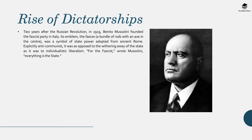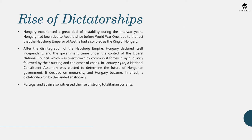Two years after the Russian revolution, in 1919, Benito Mussolini founded the fascist party in Italy. Interestingly, he was an ex-journalist, and the party's emblem — a bundle of rods with an axe at the centre — was a symbol of state power adopted from ancient Rome. Explicitly anti-communist, it was opposed to both the withering away of the state and to individualistic liberalism. As Mussolini wrote: "For the fascist, everything is the state."